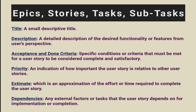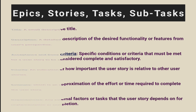Specific conditions or criteria that must be met for the user story to be considered complete and satisfactory. Priority: an indication of how important the user story is relative to other user stories. Estimate: an approximate effort or time required to complete the user story. Dependencies: any external factors or tasks that the user story depends on for implementation or completion.